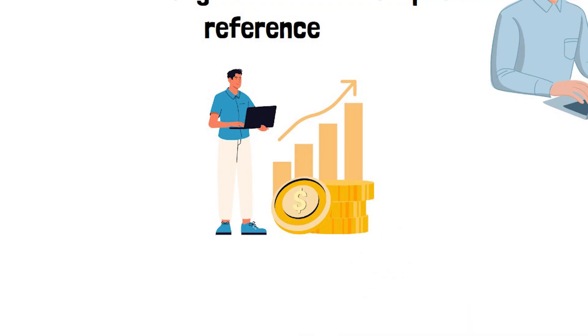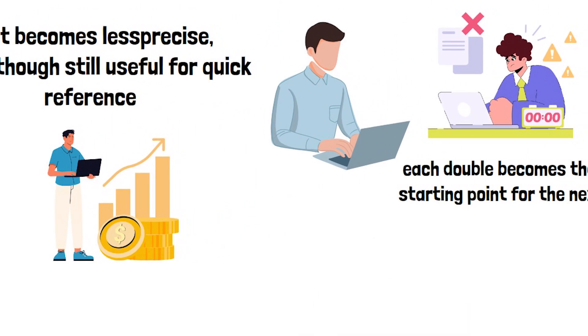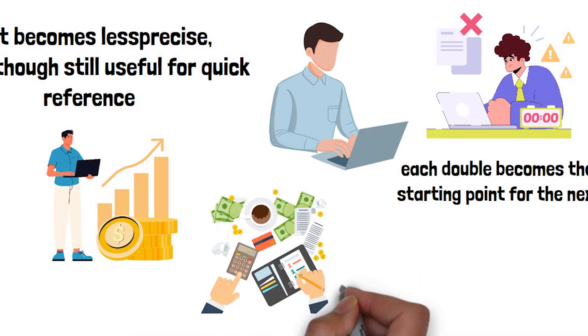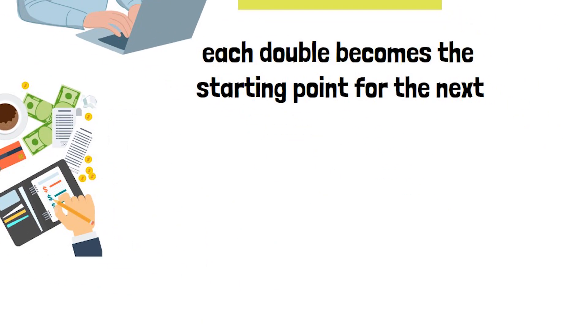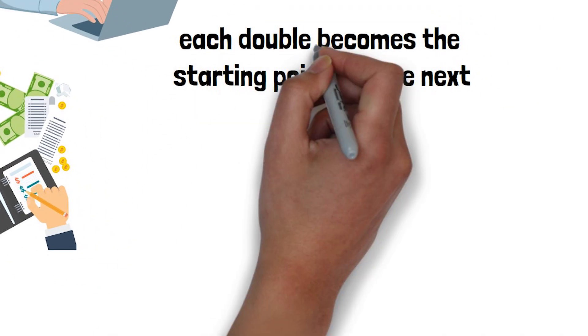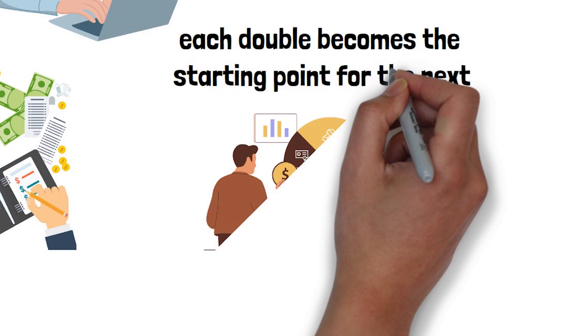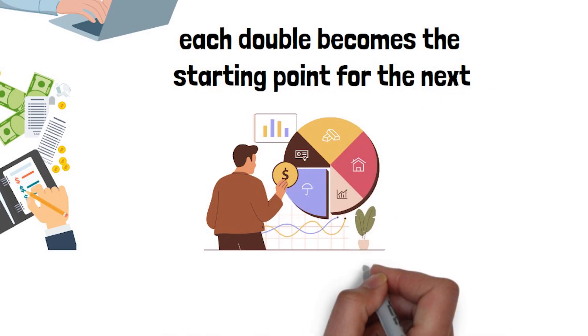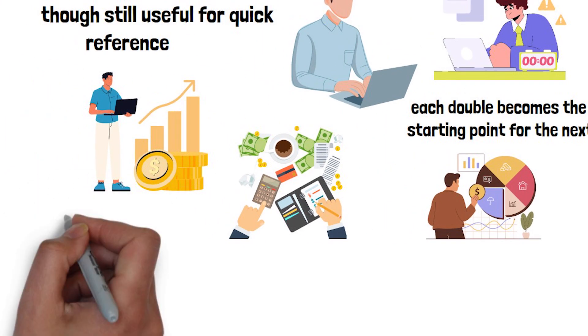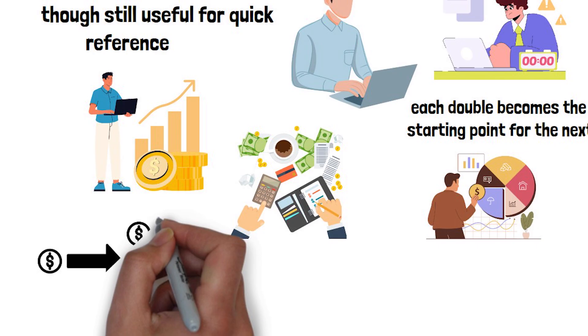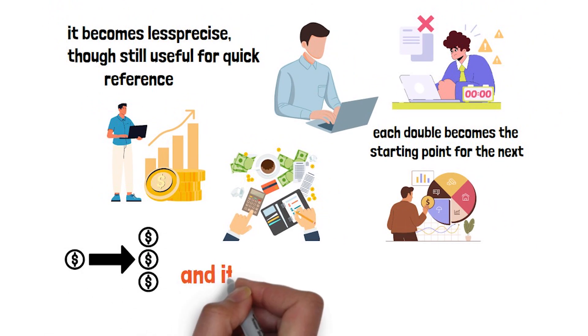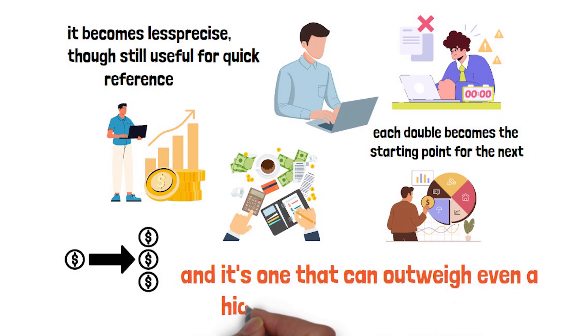Over 30 or 40 years, the difference between one or two doubling cycles and five or six is the difference between modest savings and transformational wealth. Having this shortcut in your back pocket means you can quickly weigh almost any financial decision, from where to park your emergency fund to how aggressively to invest for long-term goals. But the speed of doubling isn't the only factor that matters.